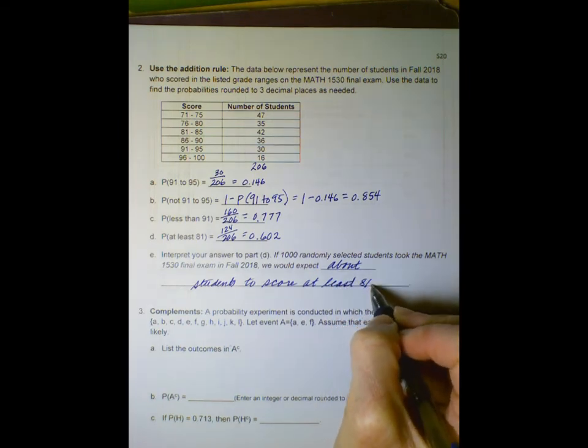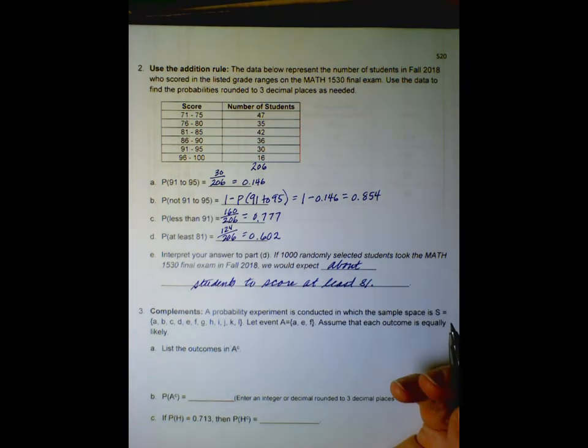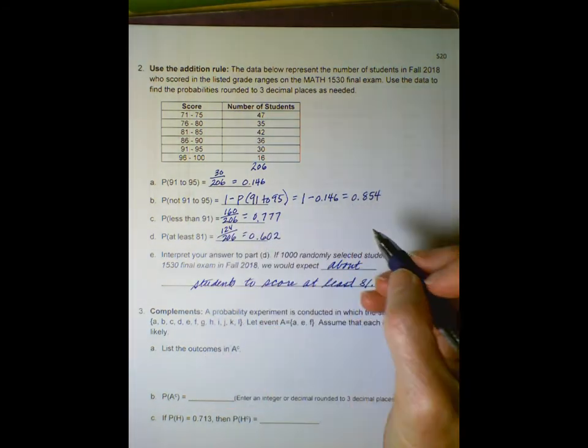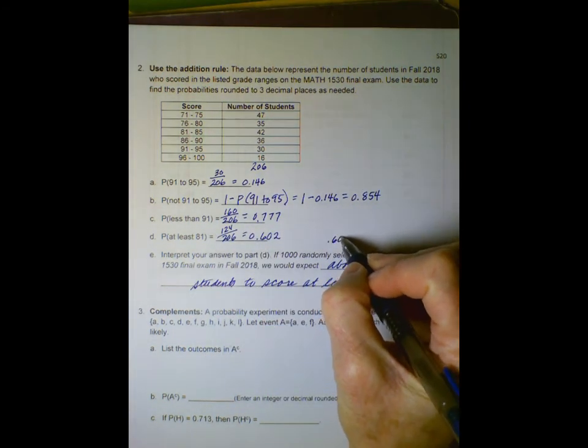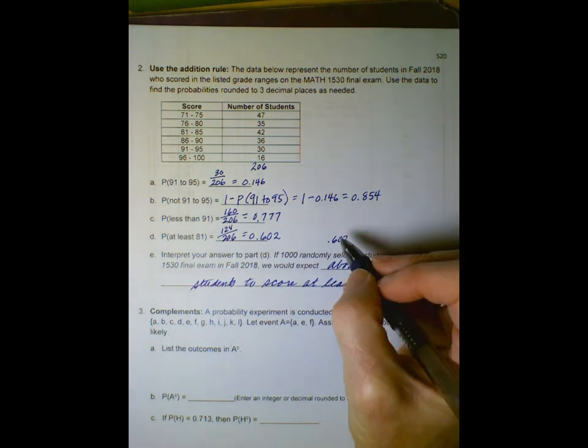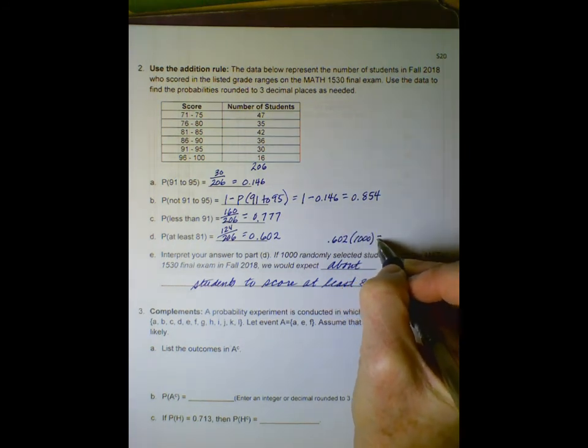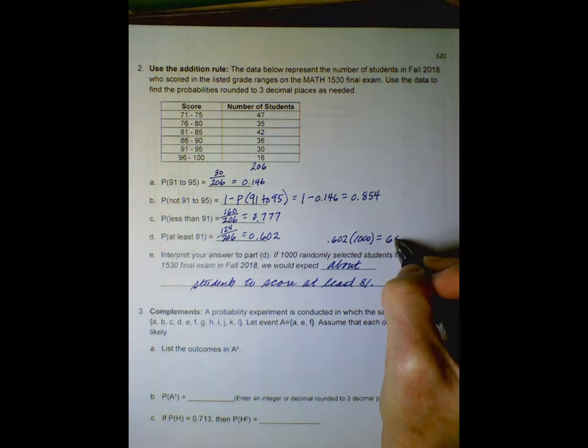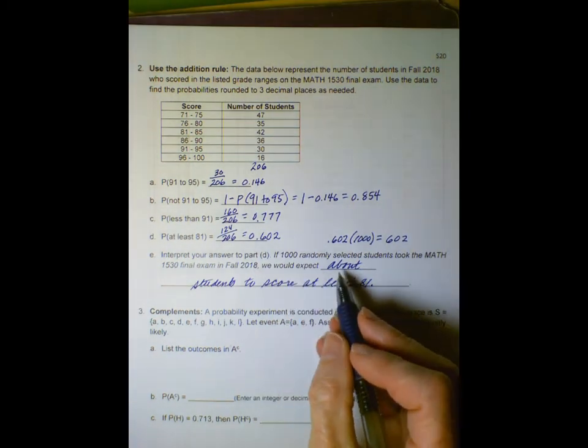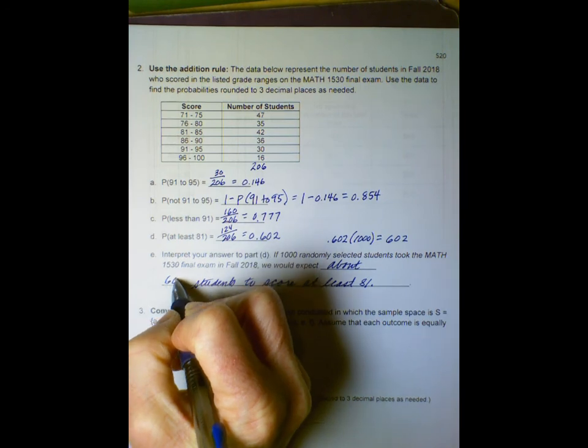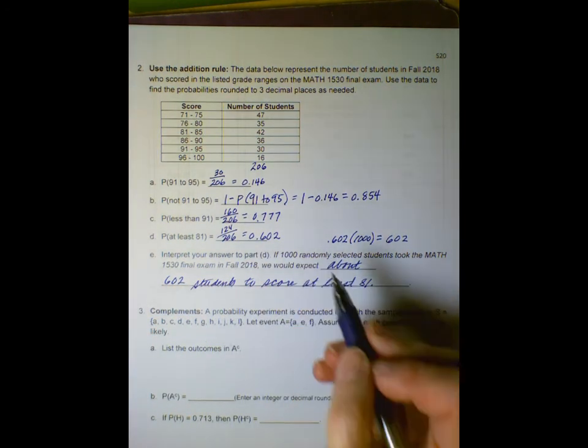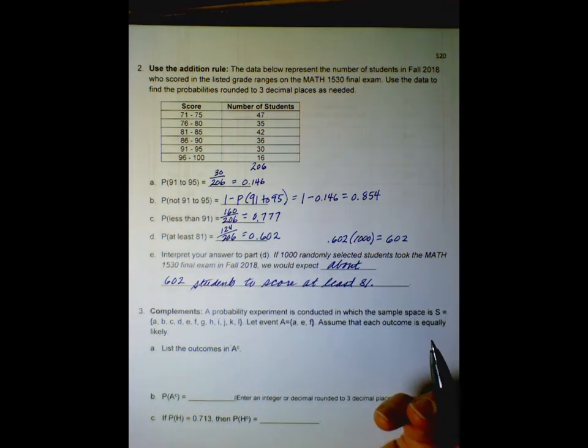How do we figure that out? Well, if the probability of at least 81 is 0.602, then 0.602 times 1000 would tell us how many students, and that's 602. So we would expect about 602 students out of a thousand to score at least 81. We'll continue this in the next video.